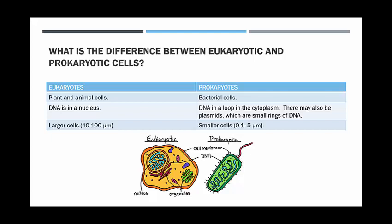Eukaryotes are much larger cells, between 10 and 100 micrometres. A micrometre is a millionth of a metre, whereas for prokaryotes, they're much smaller, between 0.1 and 5 micrometres.